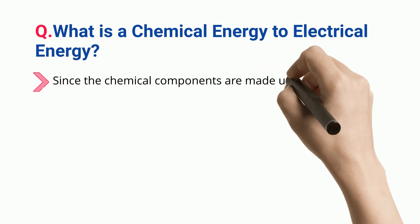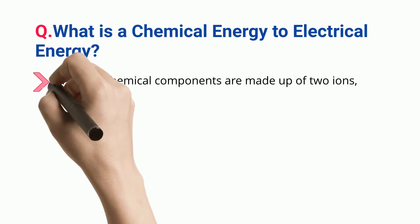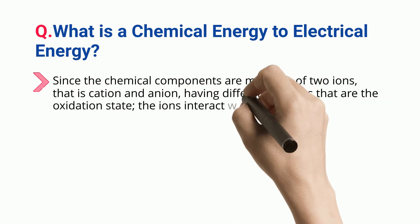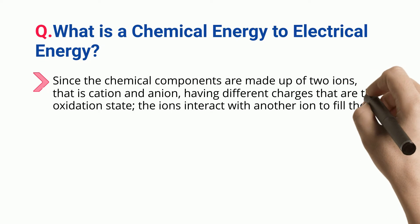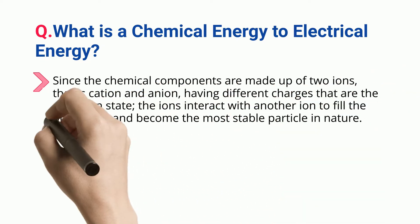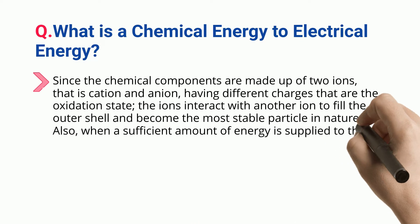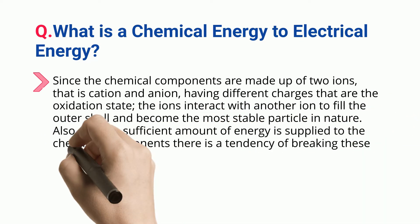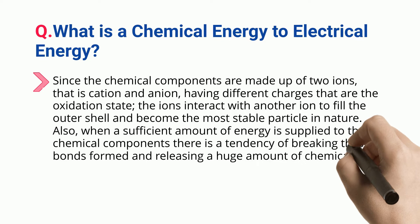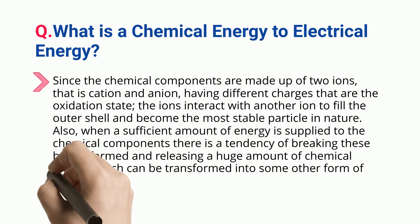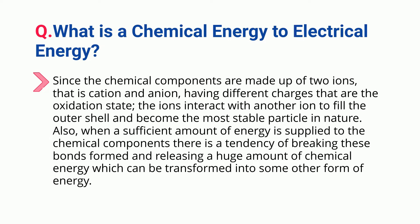Since the chemical components are made up of two ions — that is cation and anion — having different charges that are the oxidation state, the ions interact with another ion to fill the outer shell and become the most stable particle in nature. Also, when a sufficient amount of energy is supplied to the chemical components, there is a tendency of breaking these bonds and releasing a huge amount of chemical energy which can be transformed into some other form of energy.